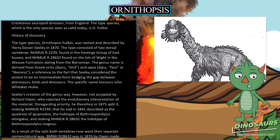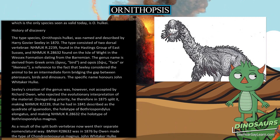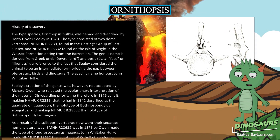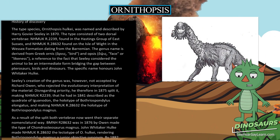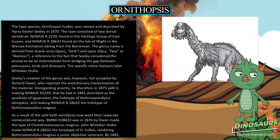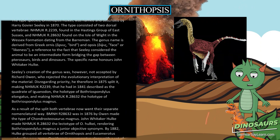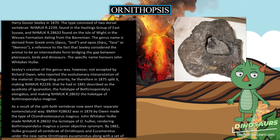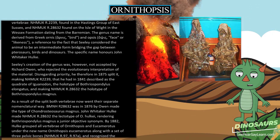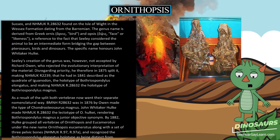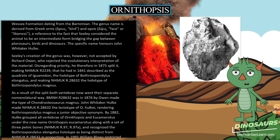The specific name honors John Whitaker Hulke. Seeley's creation of the genus was, however, not accepted by Richard Owen, who rejected the evolutionary interpretation of the material. Disregarding priority, Owen therefore in 1875 split it, making NHMUK 2239 — which he had in 1841 described as a quadrat of Iguanodon — the holotype of Bothriospondylus elongatus, and making NHMUK 28632 the holotype of Bothriospondylus magnus.